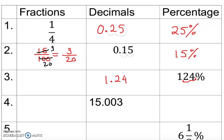Now I'm going to convert 1.24 to a mixed fraction manually. I have the whole number 1, so it will be a mixed fraction. I put 24 on top — reading the decimal: tenths, hundredths — so it's 24 over 100. Now we reduce it. What is common between 24 and 100? Use your divisibility rules and intuition to check.